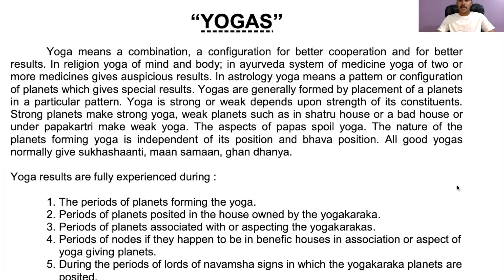Yogas are generally formed by placement of a planet in a particular pattern. A yoga is strong or weak depending upon the strength of its constituents. Strong planets make strong yogas; weak planets — such as those in an enemy house, a bad house, or under combustion — make weak yogas. The aspects of malefic planets spoil yogas. The nature of the planets forming a yoga is independent of its position.